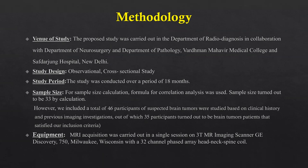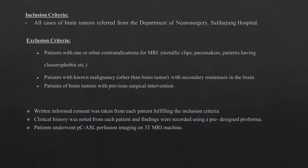MRI acquisition was carried out in a single session on a 3-Tesla MR imaging machine with a 32-channel phased array head, neck, and spine coil. All cases of brain tumors referred from the Department of Neurosurgery at Sabta Jung Hospital were included. Exclusion criteria included patients with contraindications for MRI such as metallic clips, pacemakers, or claustrophobia, patients with known malignancy other than brain tumor with secondary metastasis, and patients with previous surgical interventions.